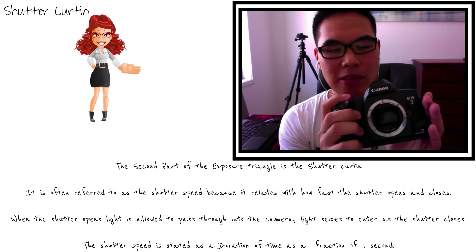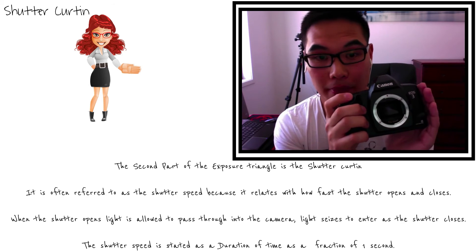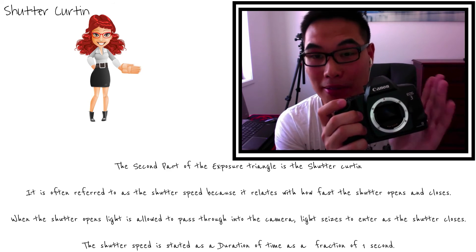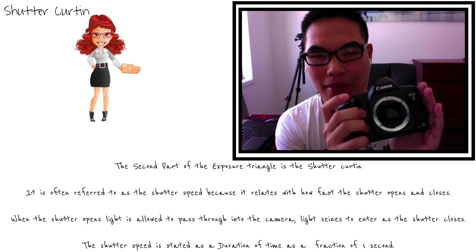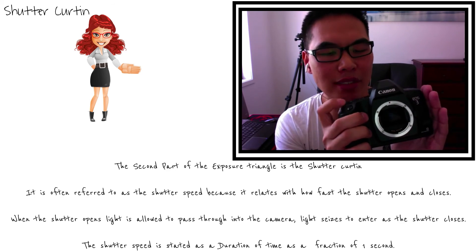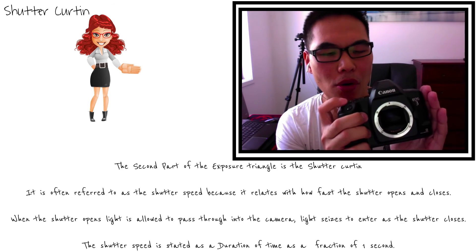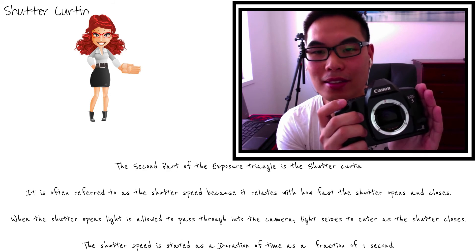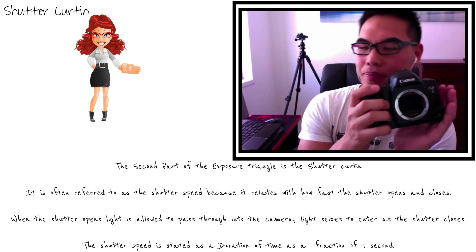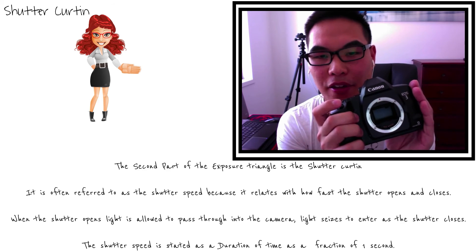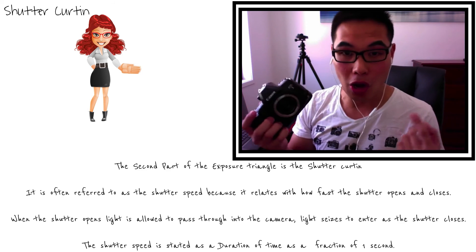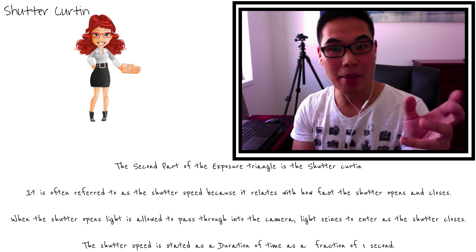I'm going to set a shutter speed of one one-hundredth of a second — you can see it open briefly. Going up to one eight-thousandth of a second, that's very quick. Let's use a slow one so you can actually see — let's go for one second. There it goes, it closes. One second. What you're seeing in there is the back of the camera, but if this were a digital camera, that would be the sensor being exposed for one second.